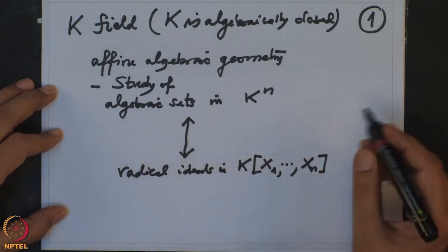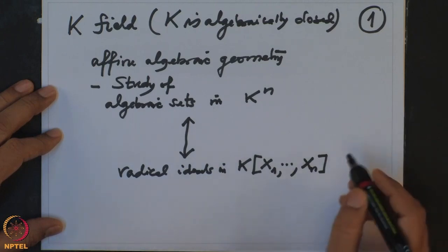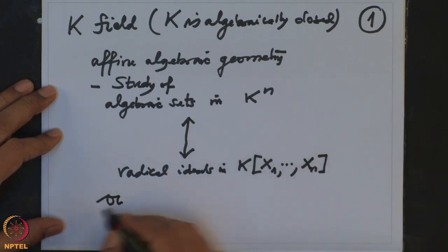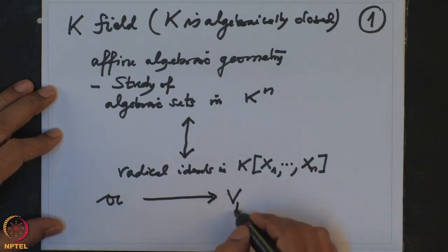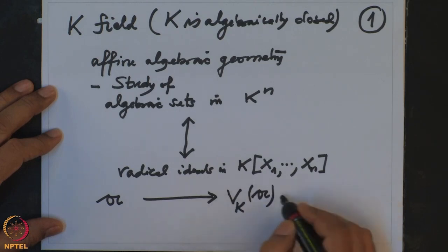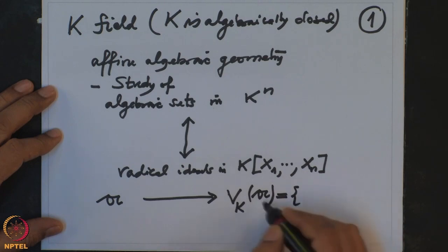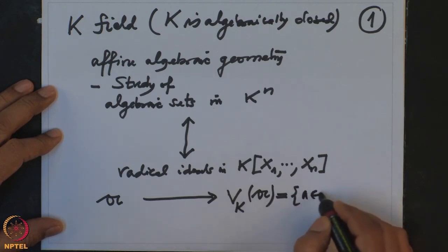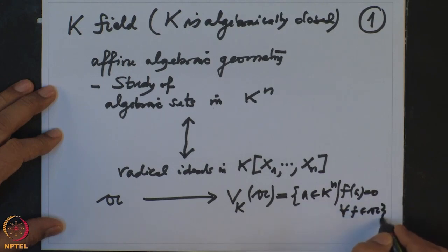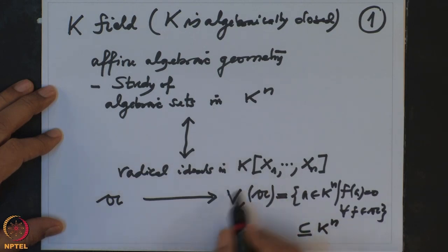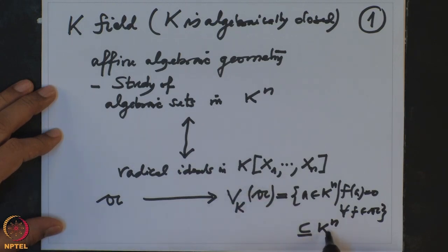The correspondence is: if you have a radical ideal A, using that we define V(K,A) — this is all the common zeros of all the polynomials in A, that is, all points in K^N such that F(a)=0 for all F in A. This is a subset of K^N and these sets are precisely the closed sets of the Zariski topology on K^N.